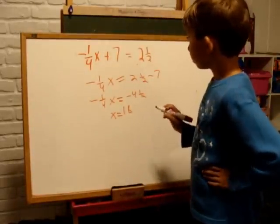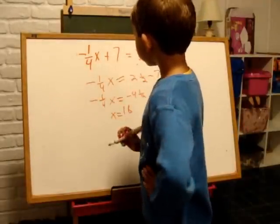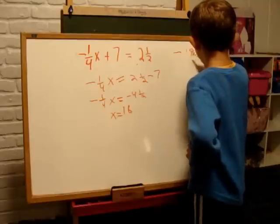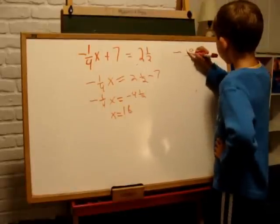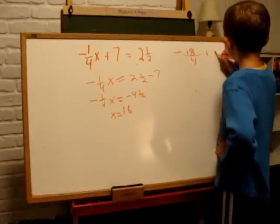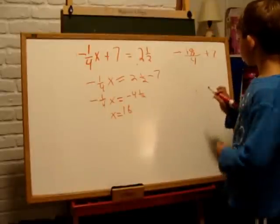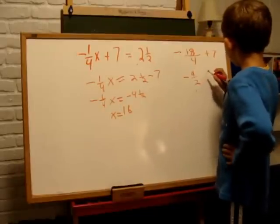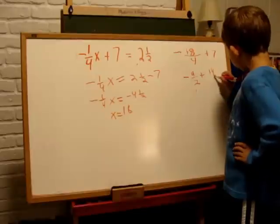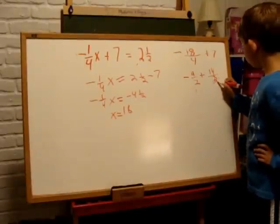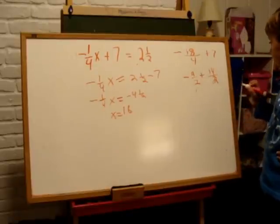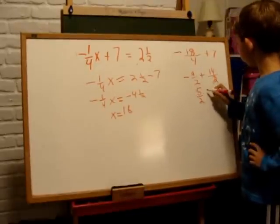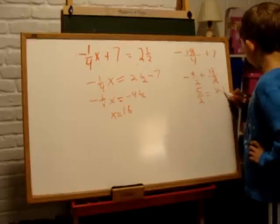Now we check our answer. We plug 18 in as x and get 5 halves, which equals 2 and a half, and it checks out.